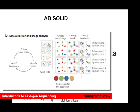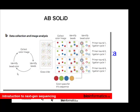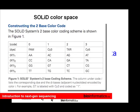In color space, each of the four different dyes tells you what pair of nucleotides is there. So one color gives you four possibilities: for example, if you have that color you have one of four possible di-nucleotide pairs. This is the core of color space encoding in SOLiD.